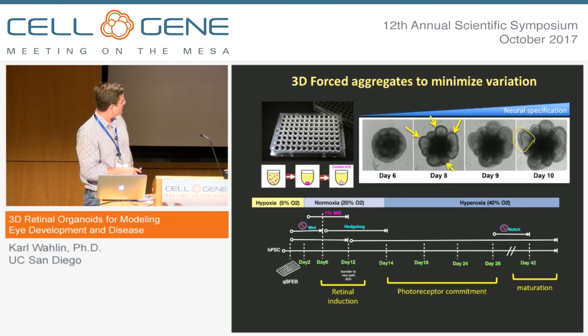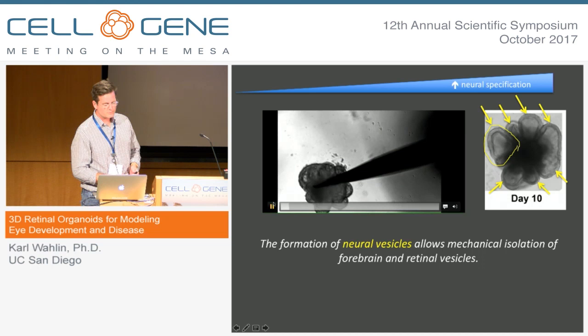The system uses Wnt inhibition at early stages, hedgehog signaling slightly later, and then we block Notch signaling even later in order to improve the yield of photoreceptors.